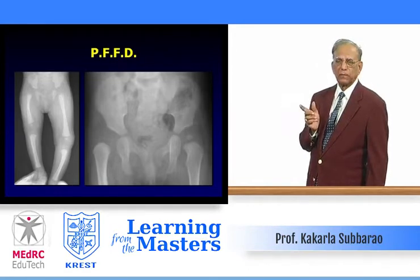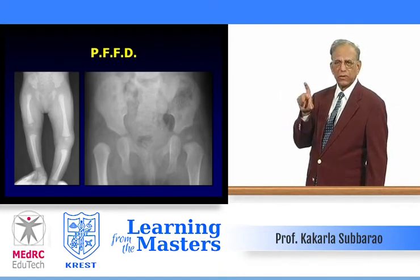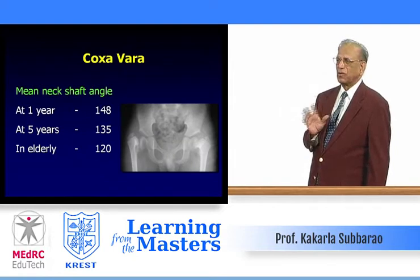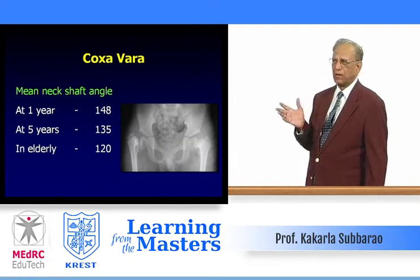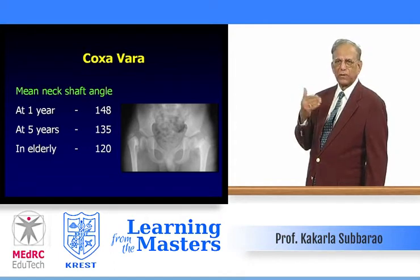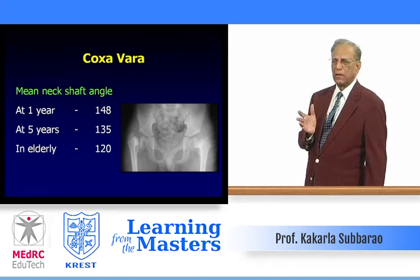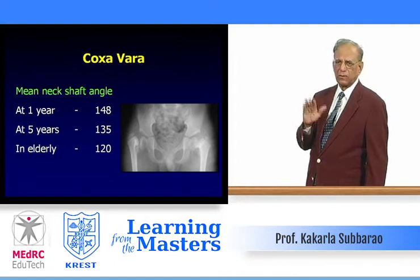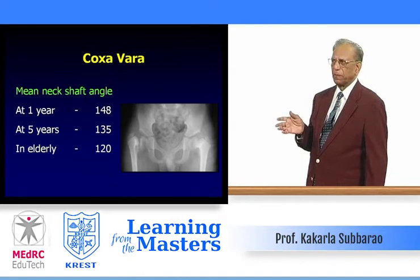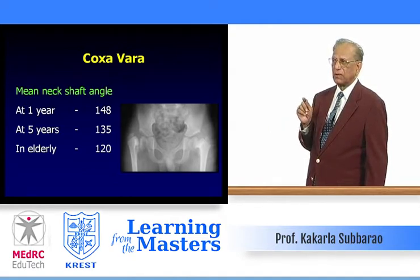PFFD should be distinguished from congenital dislocation of the hip — in CDH there is no shortening of the femur. Then there is idiopathic coxa vara of childhood. Normally in adults, the neck-shaft angle varies from 120 to 125 degrees; at one year it is 148 degrees, and at five years it is 135 degrees. There are two types: the congenital form, present at birth, and the infantile form, recognized around four years of age, often bilateral in about 33% of cases.